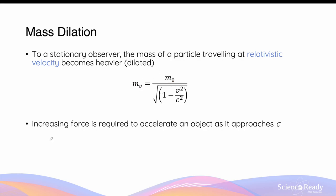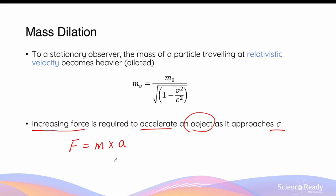The implication of mass dilation is that we will need an increasing amount of force to accelerate an object with mass as it approaches the speed of light c. This is because according to Newton's law, F is equal to the mass of the object multiplied by acceleration. If we have an object whose mass is increasing, for us to maintain a constant acceleration, we also need to increase the force in the same proportion as the mass.